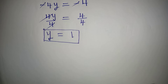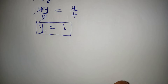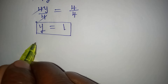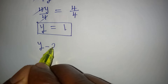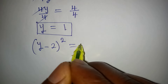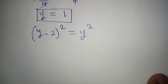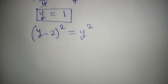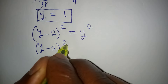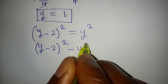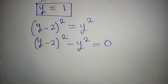Now let us apply the second method, and after that we will put the answer back into the equation to verify. We have (y minus 2) squared equal to y squared. The second method I want to use is the difference of two squares, so we rearrange to get (y minus 2) squared minus y squared equal to 0.